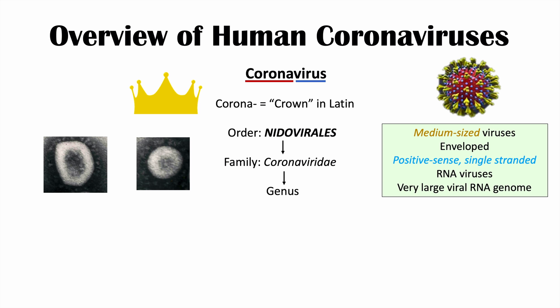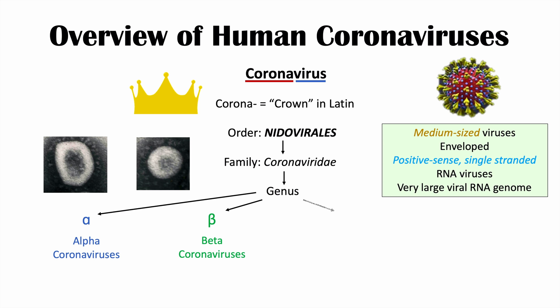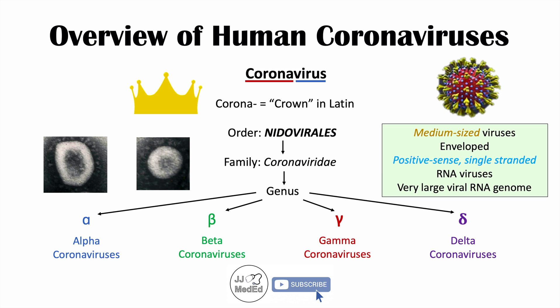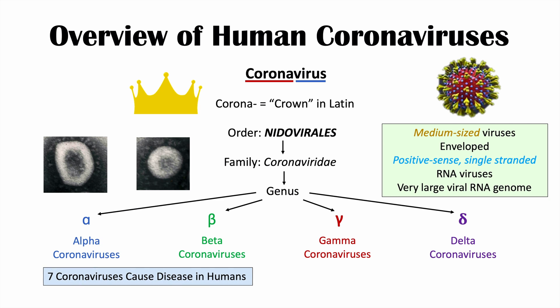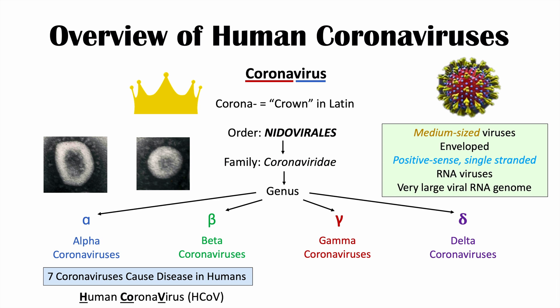There are four genera of coronaviruses: alpha coronaviruses, beta coronaviruses, gamma coronaviruses, and delta coronaviruses. The alpha and beta genera are where all of the human coronaviruses reside. There are actually seven coronaviruses that cause disease in humans, and four of these have HCOV in their name — HCOV comes from human coronavirus.